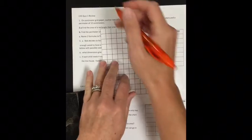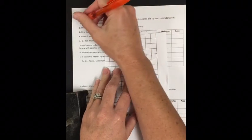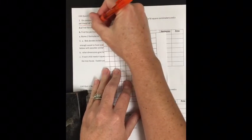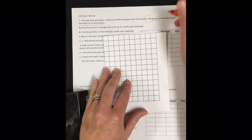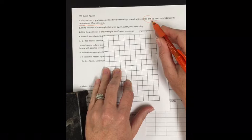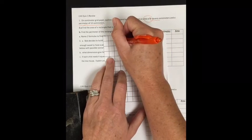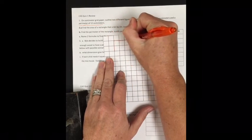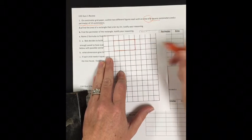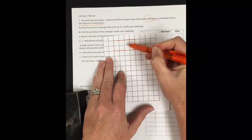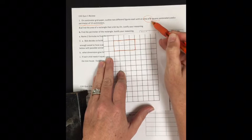If I want to have a perimeter of 12 and an area of 8, that means I can only circle in or box in 8 of the boxes. So I could make a 4 by 2. And let's check my work: 1, 2, 3, 4, 5, 6, 7, 8. So I have an area of 8.